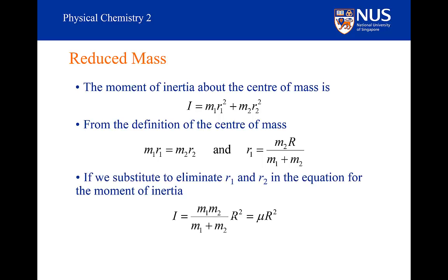Substituting for both r1 and r2 into the moment of inertia equation, we will find that the moment of inertia is equal to m1 times m2 over m1 plus m2 times the bond length squared. And we call m1 plus m2 the reduced mass, which is given the symbol mu. So the moment of inertia for a diatomic system around the centre of mass is simply the reduced mass times the bond length squared.